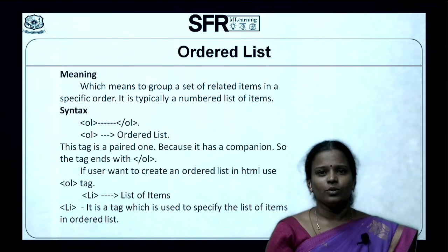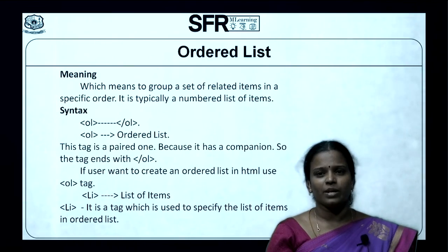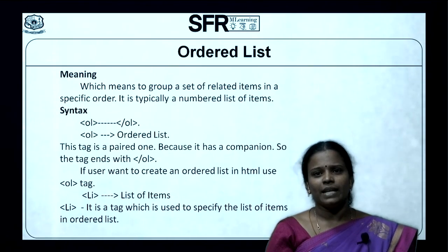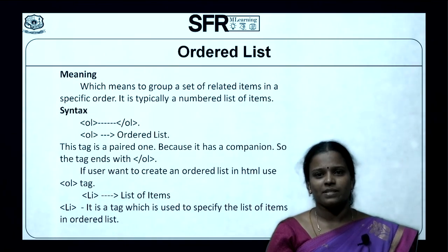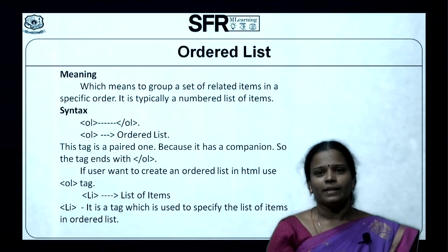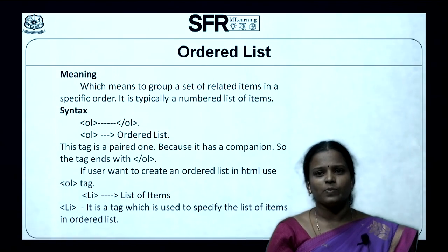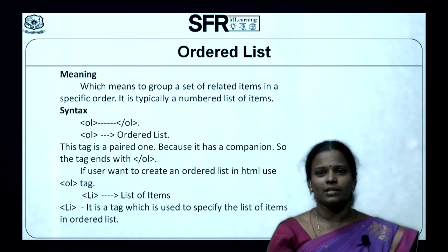If a user wants to create an Ordered List in HTML, use the OL tag. LI denotes list of items. It is a tag which is used to specify the list of items in an Ordered List.